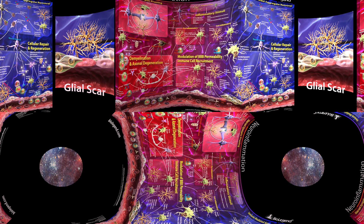Reactive microglia and astrocytes produce factors that help with tissue regeneration. Reactive microglia do so by producing factors such as arginase 1 to reconstruct the extracellular matrix (ECM) and repair damaged tissues. Reactive astrocytes secrete a variety of molecules such as chemoattractant and neurotrophic factors to aid ECM reconstruction, neovascularization, and angiogenesis.